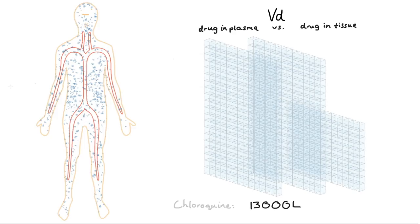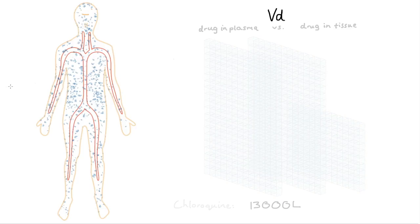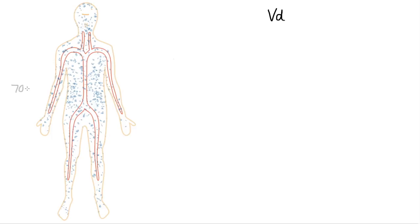To reiterate, volume of distribution gives you an idea of how much drug will stay in the blood and how much will spread into tissue. But the values given here are average values for a 70 kilogram person, so they won't reflect the VD for all people. For instance, if a patient has more adipose tissue to soak up the drug, the VD will be higher because there's effectively a bigger volume for the drug to spread into. For that reason, VD is often quoted as a litres per kilogram value.